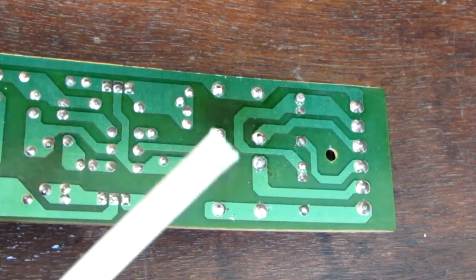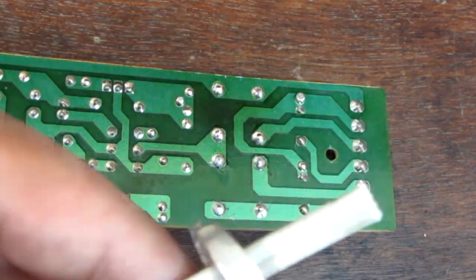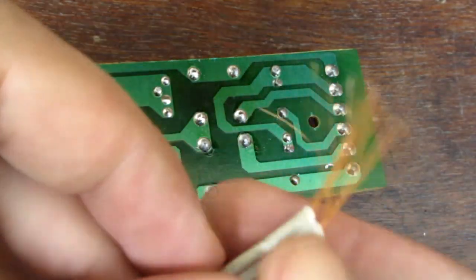So first we're gonna need a piece of standard copper wire, then we're gonna strip it and twist it to hold its shape.